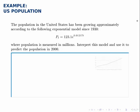The model we're given is that the population in the U.S. has grown according to this exponential model, which fits the form P_t equals P₀ times e to the rt, where P_t is the population at any point in time, P₀ is the initial population, r is the growth rate, and t is the number of years since that initial point.